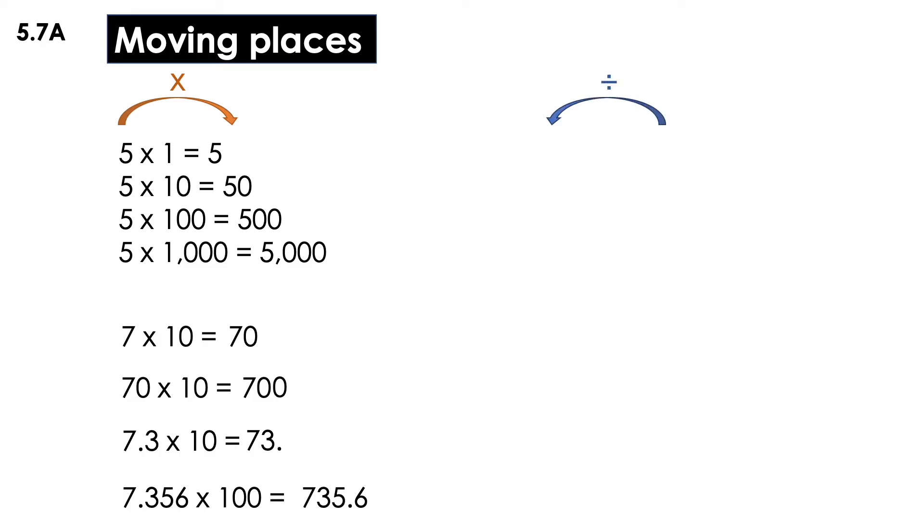Now in division, it's completely the opposite. I'm going to move to the left. So in this case, as you can see, now my numbers are decreasing. 5 divided by 10 is equal to 5/10, 5 divided by 100 is equal to 5/100, and so on.